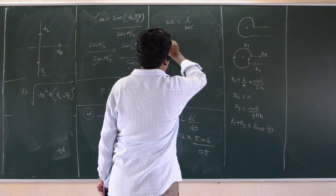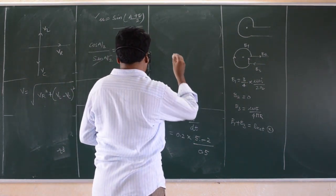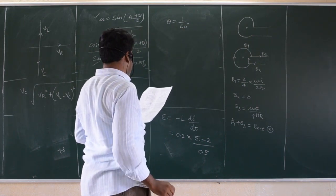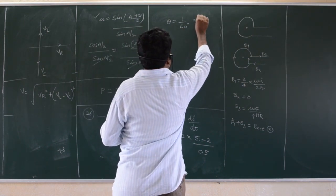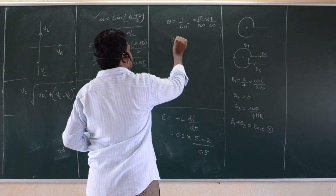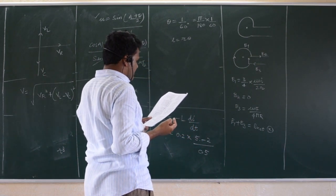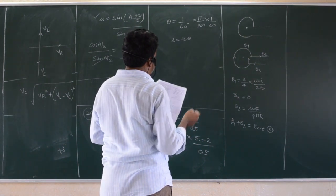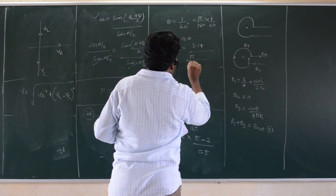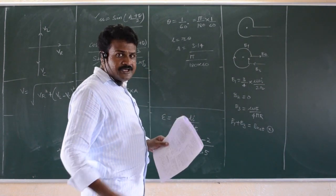Question number 27 is based on resolving power. The resolving power theta is given as 1 minute, that is 1 by 60 degrees, which can be converted to radians as pi by 180 times 1 by 60. Using L equals R theta, with L given as 3.4, you solve for R. The answer is approximately 10.8 kilometers.